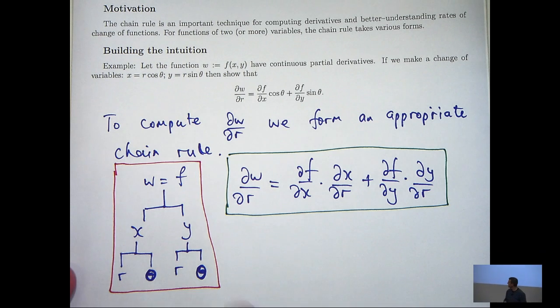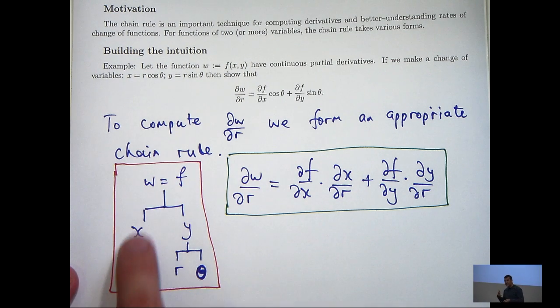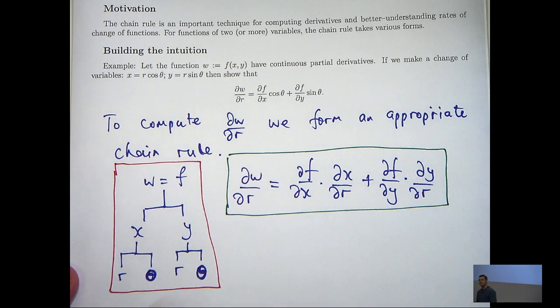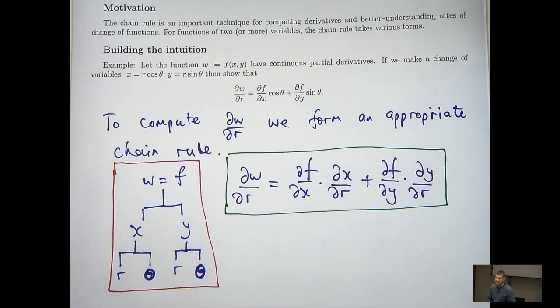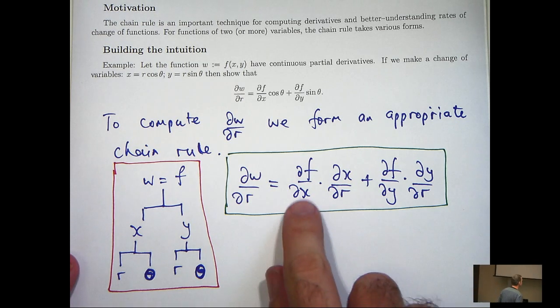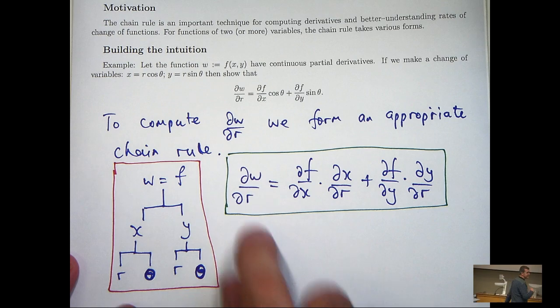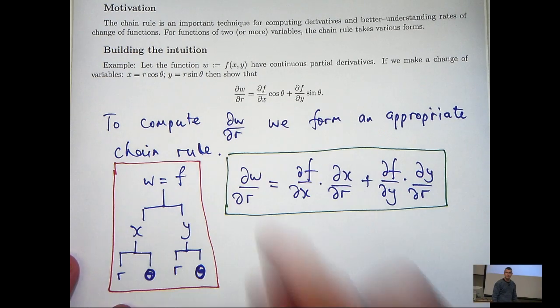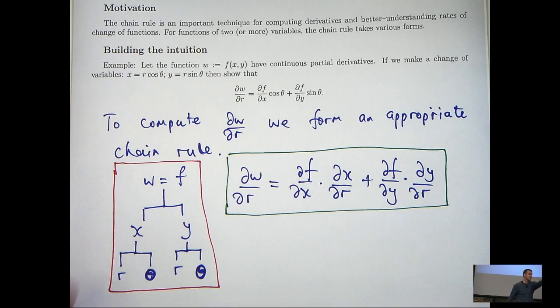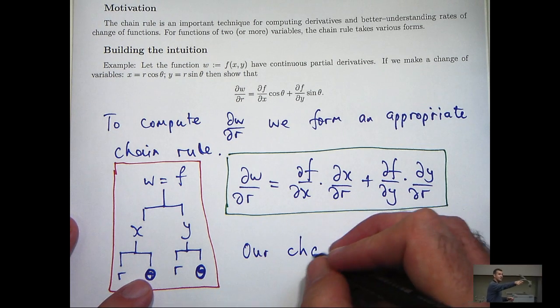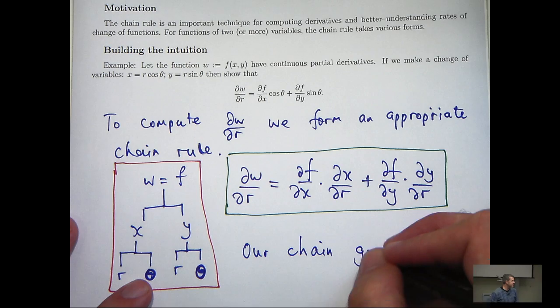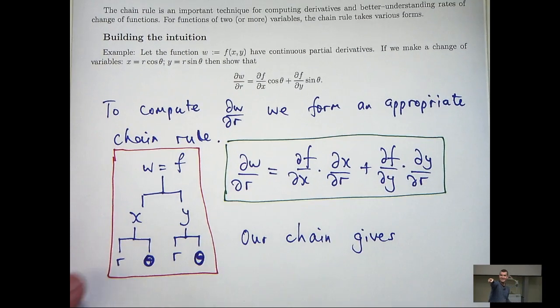That is my general chain rule for dw/dr. I could also form a chain rule for dw/d theta by going down all the paths leading to a theta, but that is not what we need here. So, let's see if we can compute these partial derivatives and come up with the required expression for dw/dr.